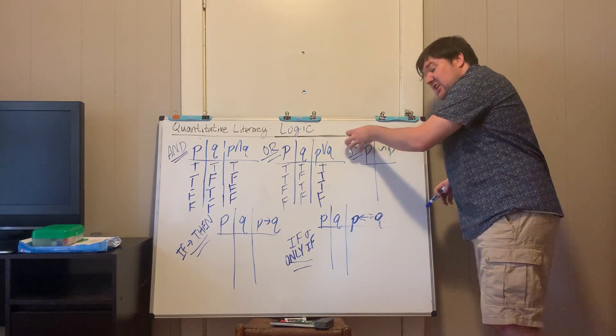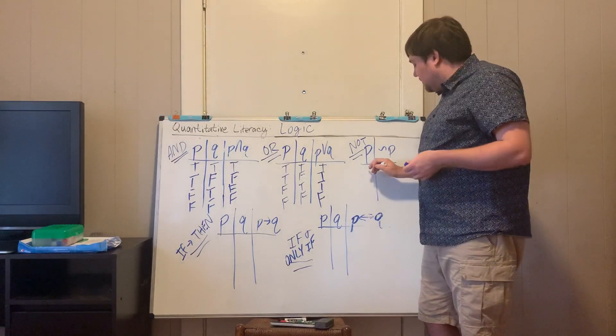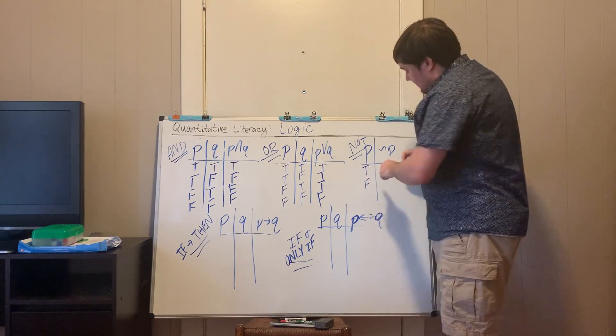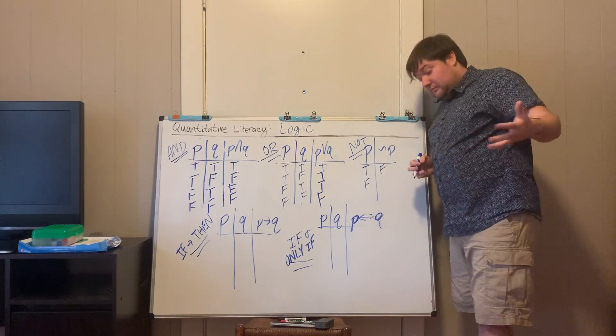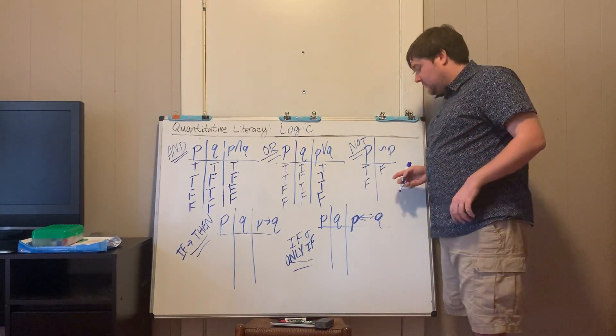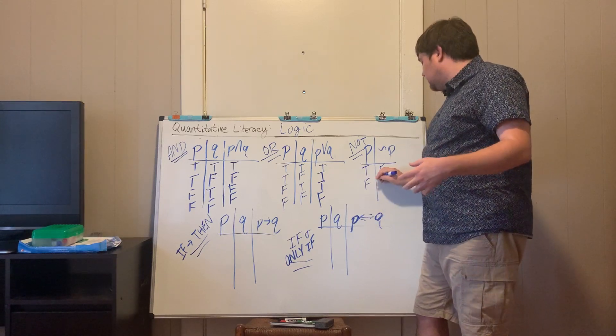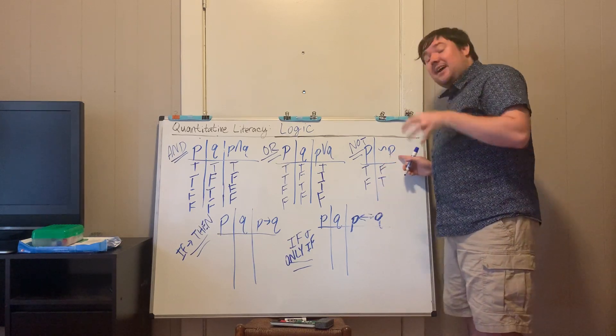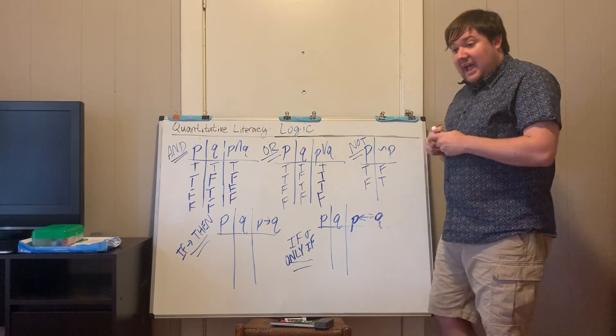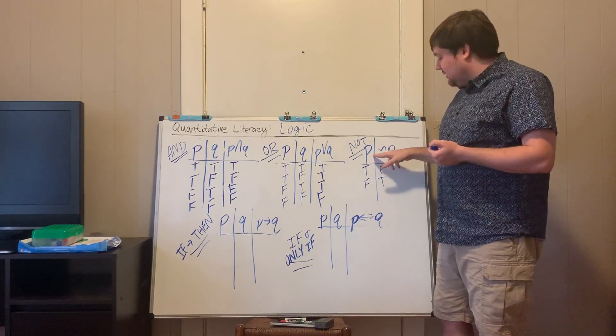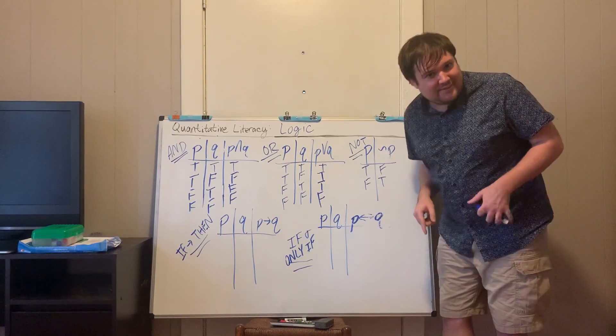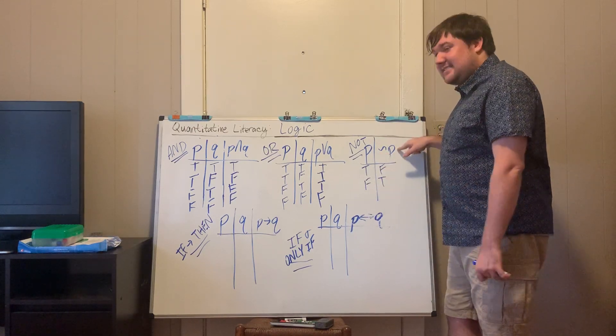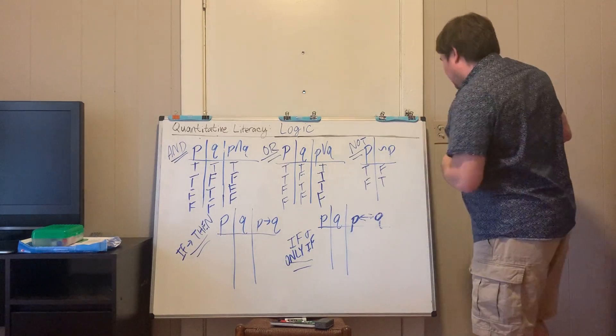Now we've got the not conjunction. So that basically will switch the truth value of our statement. So if our statement is true, not that statement would be false. So if the original statement is true, then our not statement, or if our first statement is false, sorry, our not statement would be true. So if I have a dog is the statement. I don't have a dog. That's not true. So it would be false. If I don't have a dog, then the statement I don't have a dog is true. That's another way of saying it.